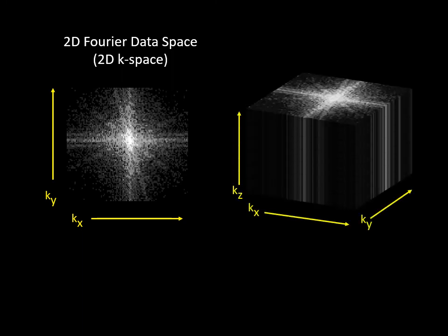The same can be extrapolated to three dimensions if you collect a frequency data in the z direction, so the third dimension becomes kz in addition to kx and ky, and in this case we have 3D Fourier space or 3D K space.